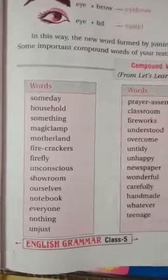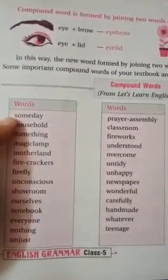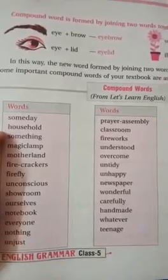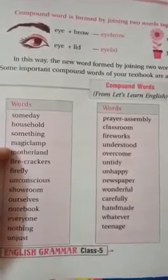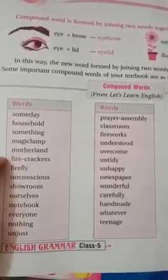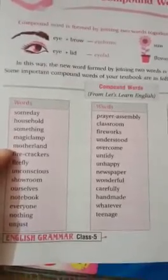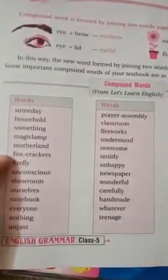Now you can see here on page number 5 some examples. You can see words like someday, household, something, magic lamp, and mother lamp — it is made by two words: mother plus lamp.